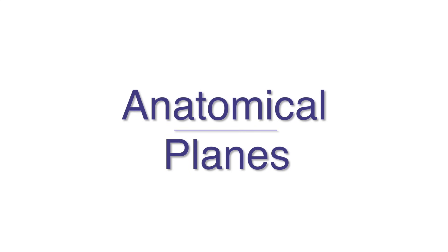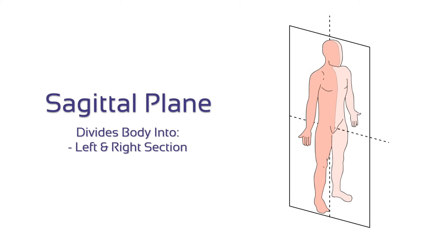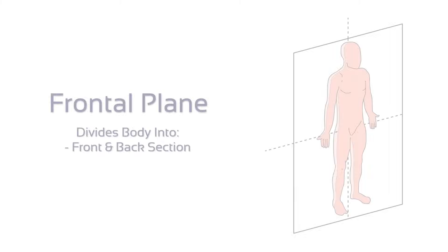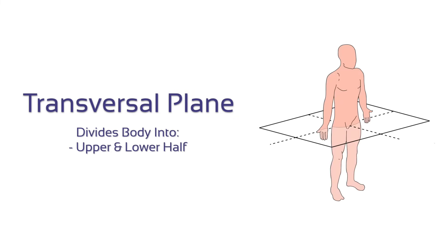Let's discuss the different planes first. The sagittal plane divides the body into a left and a right section. The frontal plane divides the body into a front and a back section. The transversal or horizontal plane divides the body into an upper and a lower half.